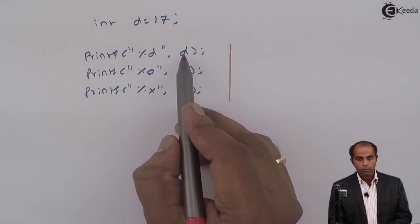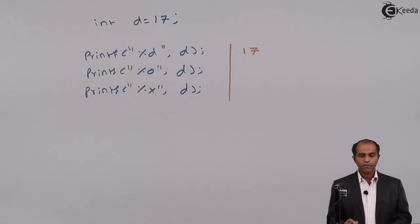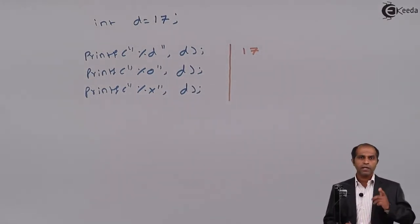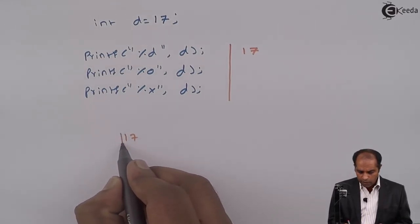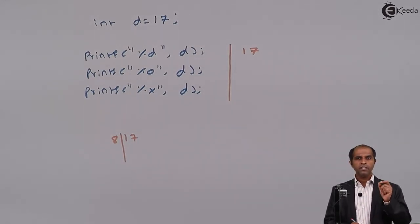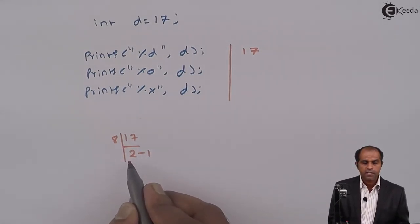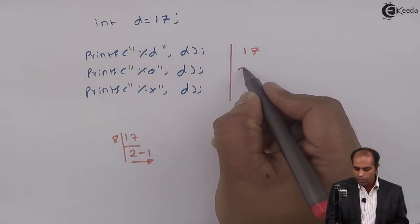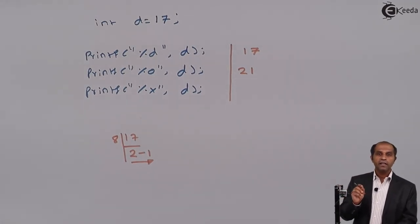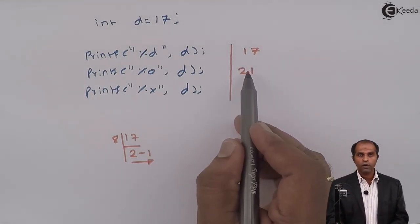The first printf displays d as a decimal integer using %d — obviously it displays 17. The second specifier, %o, displays the octal equivalent of d. To get the octal equivalent, divide 17 by 8: 8 goes once into 17 with remainder 1, giving quotient 2 and remainder 1. Since the quotient 2 is less than 8, stop. Reading the digits gives 21, so 21 is the octal equivalent of 17.